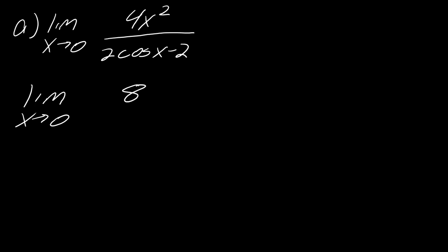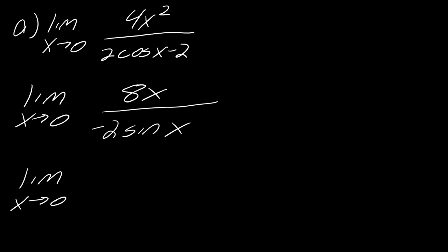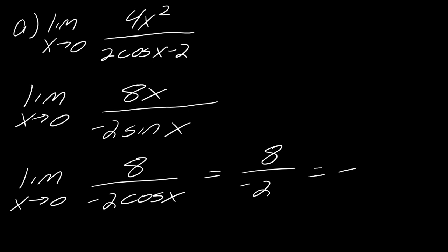Now that we have 0/0, we take the derivative of the top and the bottom. The derivative of the top is 8x, and the derivative of the bottom is −2 sin x. Plugging in 0 again gives 0/0, so we take the derivative one more time. This gives 8 over −2 cos x. Plugging in 0 gives 8 over −2, which equals −4. And so now we're done.